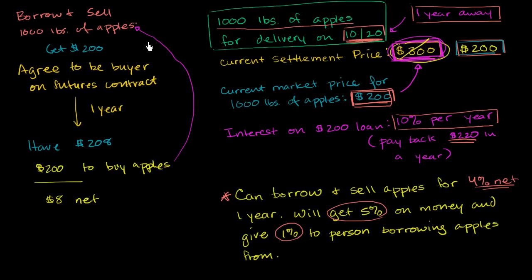So they got their apples back, and they got that 1% on the $200 over the course of the year, and I made a risk-free $8. So if you think about it, once again, this is kind of setting a lower bound on what the actual settlement price on the futures contract is. I should not be able to make this risk-free profit.